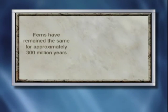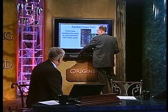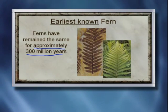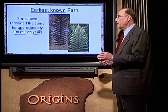The earliest known fern, for example. Most of these pictures I'll show you are the earliest examples we have of the various forms of life that we've collected in fossils. The earliest known fern — ferns have remained the same for approximately 300 million years. And if you compare a modern fern with a fossil fern, you can see they are identical. Do you believe that fossil is 300 million years old? Well, I didn't date them, so I don't know. But it's interesting, if you look at the dates, assuming they are correct, it looks like most life has not changed at all in hundreds of millions of years.